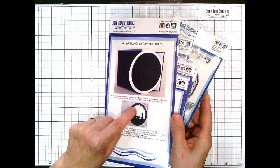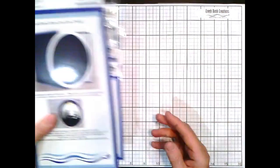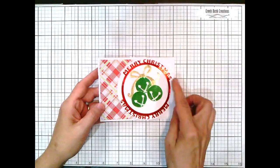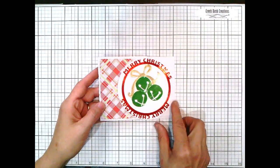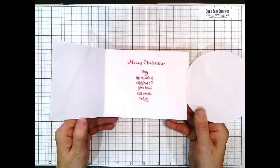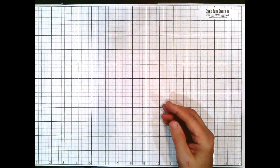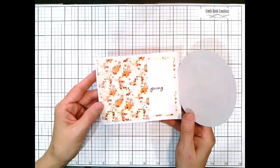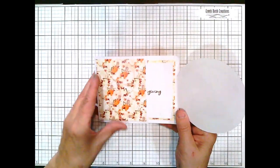All of these pieces can be used by themselves or you can team them up like we did and put them all together. This is called angel side circle. I'll show you some examples that we have. You saw the happy birthday. This is our Merry Christmas with the bells, and we have some pattern paper over here, stamp sentiment on the inside.